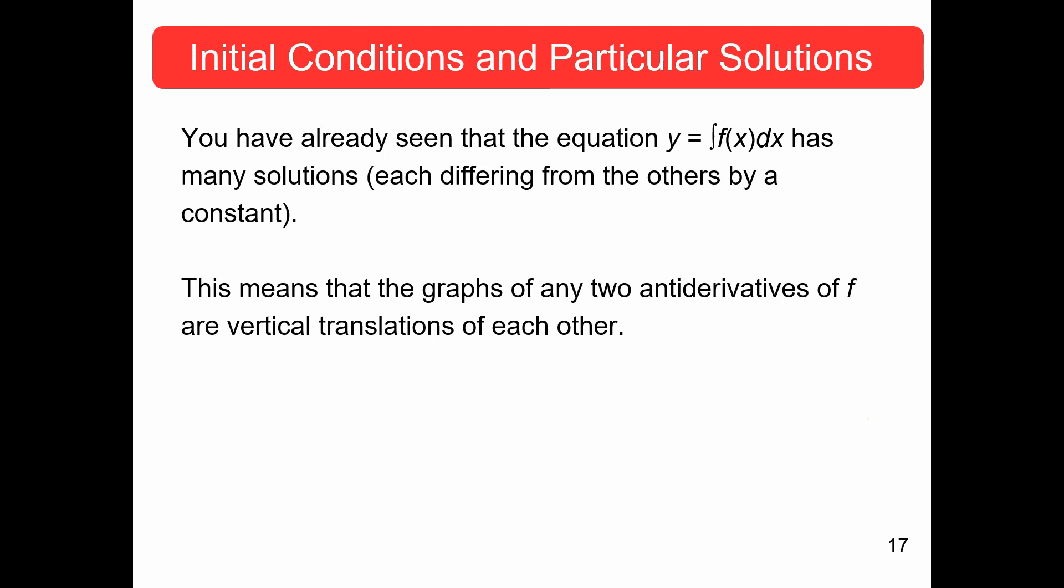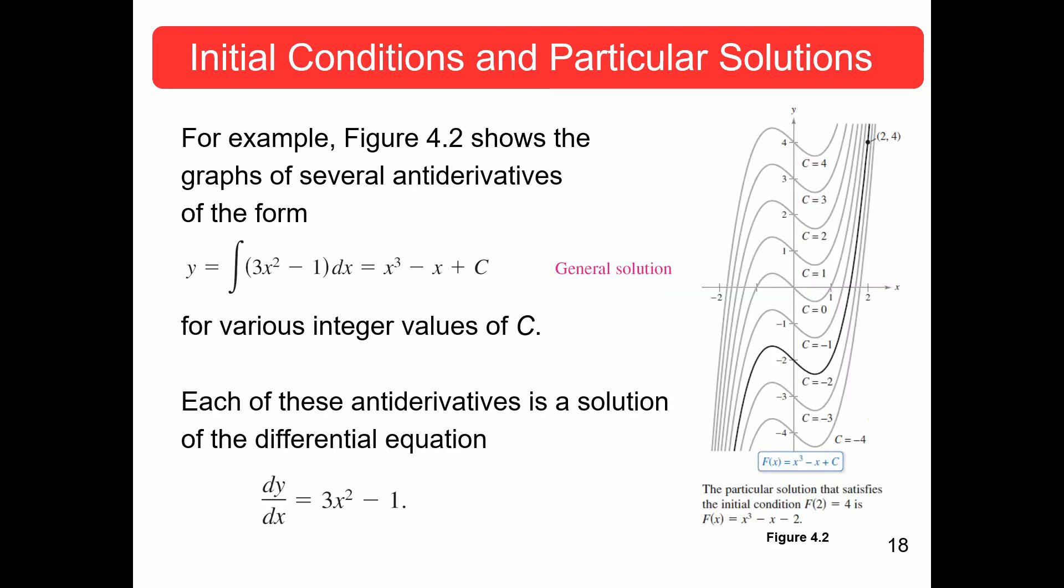This means that the graphs with any two antiderivatives of f are basically just vertical translations of each other. The C is different. The thing that we're adding, we add up 1, up 2, up 3, down 1, down 2, down 3. They basically are just a lot of different values that just differ by how they're shifted along that y-axis.